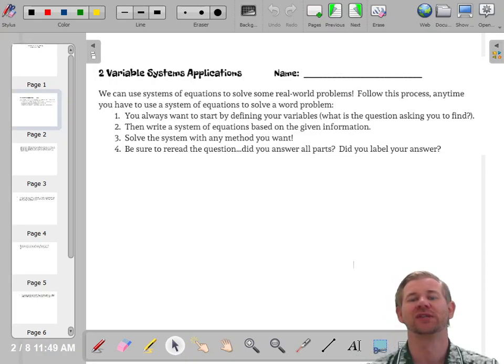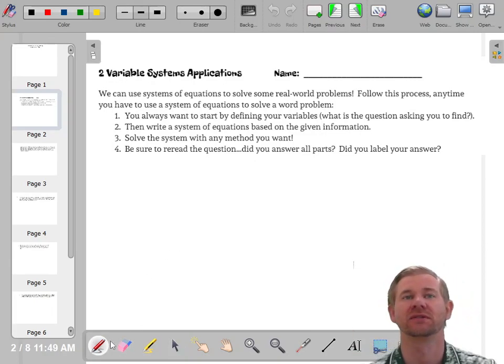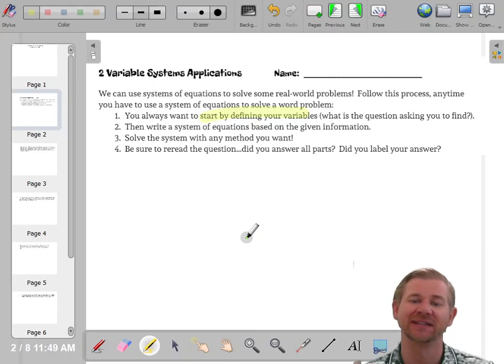Hello everyone, let's do some basic two variable system applications and then we'll apply it to three variables and actually make this a little more interesting. So for these two variable systems, really for any word problem, you're going to first start off by defining some variables. We're going to have to identify what we don't know and what we're trying to find.